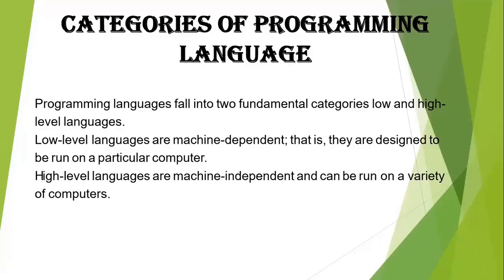Category of programming languages. So basically, programming languages fall into two fundamental categories — that is low level language and high level language. Low level languages are machine dependent, designed to run on a particular computer. And high level languages are machine independent, that can be run on a variety of computers. So these are the two fundamental categories.